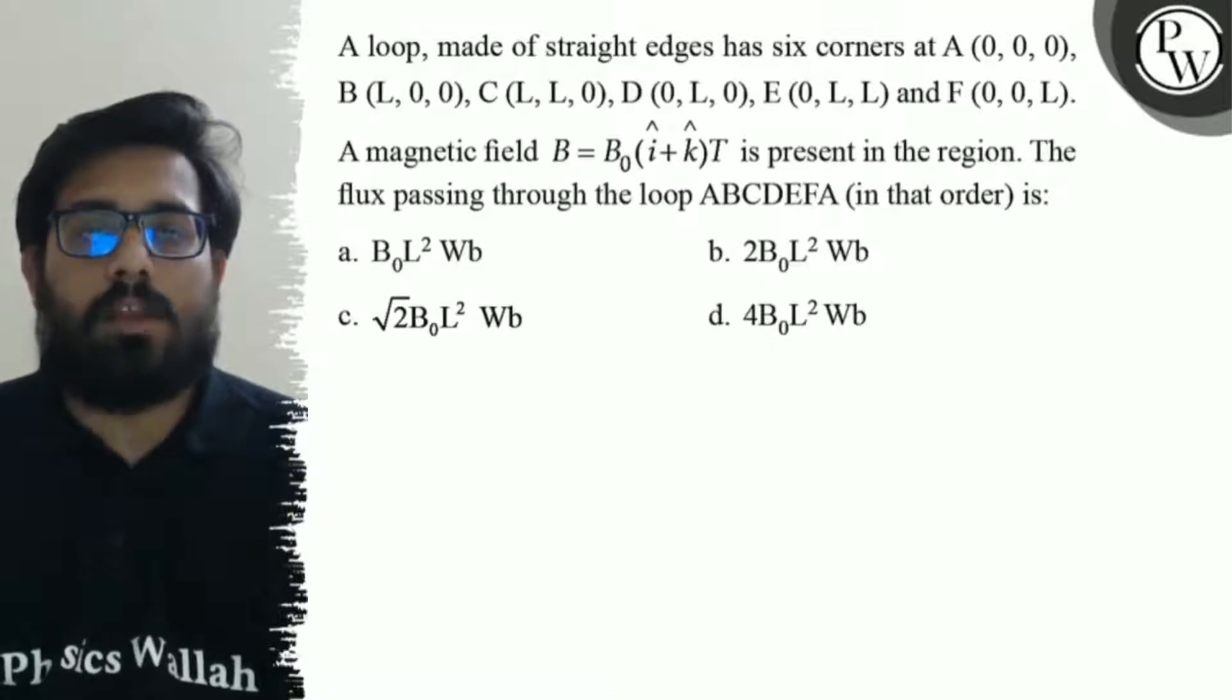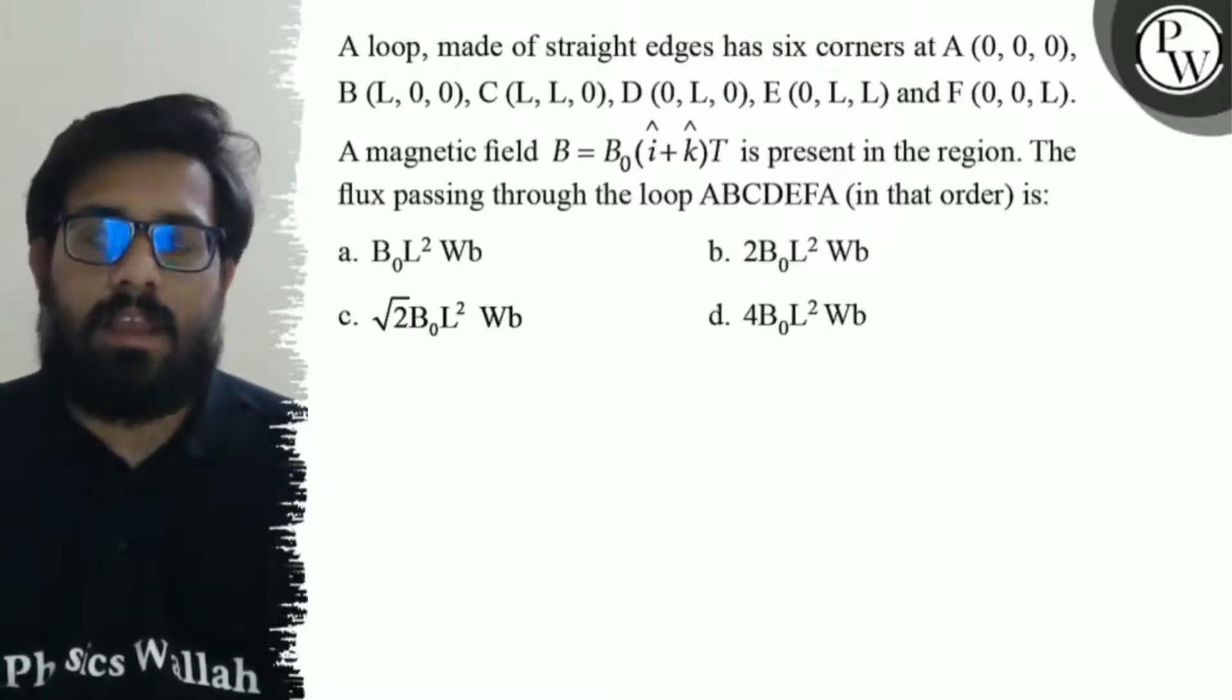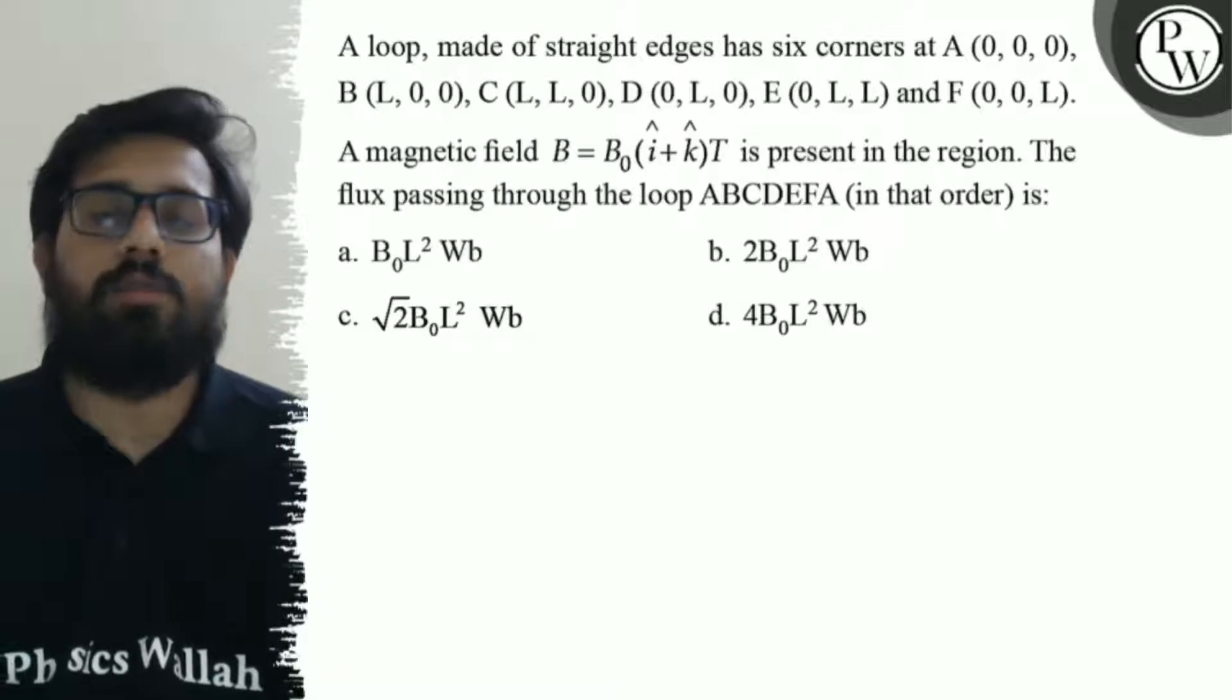And a magnetic field of B equals to B0 I cap plus K cap Tesla is present in the region. The flux passing through the loop A, B, C, D, E, F, A in that order is: your first option is B0 L square Weber, second option is 2 B0 L square Weber, your third option is under root 2 B0 L square Weber, and your fourth option is 4 B0 L square Weber.